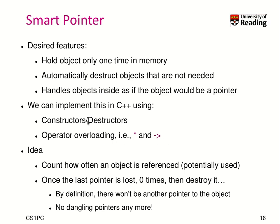This together allows us to implement smart pointers. What we need to do for a smart pointer is count how often an object is referenced — how often it is used inside your code. Once it is not referenced anymore, the reference count reaches zero, and we know it can be safely destroyed. By definition, there won't be any other pointer to the object, meaning we don't have any dangling pointers anymore.